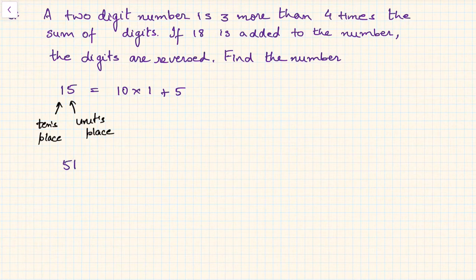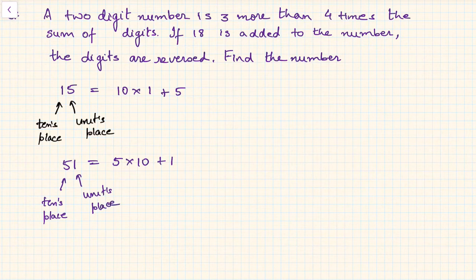And 51 is nothing but 5 into 10, again tens place digit into 10, plus units place digit that is 1. So this one here is tens place and this one is units place. So this is what a two digit number is represented as.